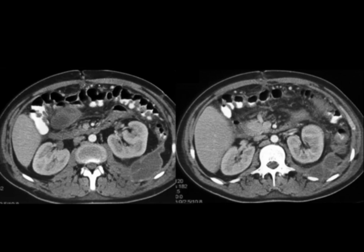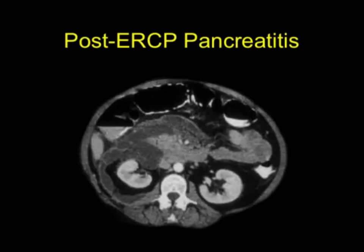Usually we talk about the left anterior pararenal space. When I see right anterior pararenal space involvement, I'm always thinking about procedure-related pancreatitis. Here's a patient post-ERCP with a fluid collection around the head of the pancreas and in the anterior pararenal space, very nicely seen.